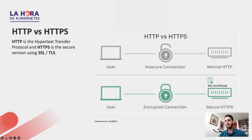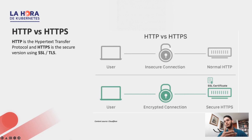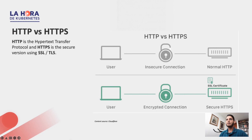So what that means is that if you put in your username and password on a certain website, that information just goes from your computer to the server in plain text — everyone will be able to see it. The difference with HTTPS, which is definitely the way to do it and the secure version of HTTP, is that all that information is encrypted, meaning instead of seeing your username and password, they just see a random set of characters they cannot decrypt.